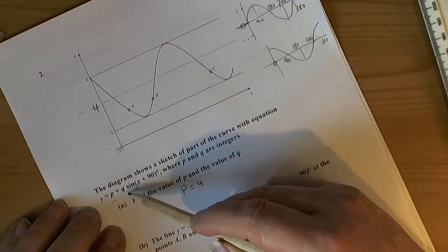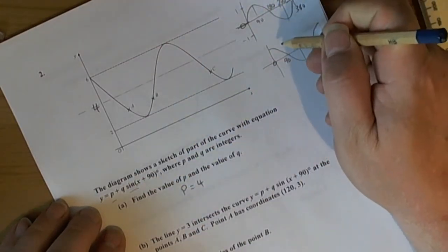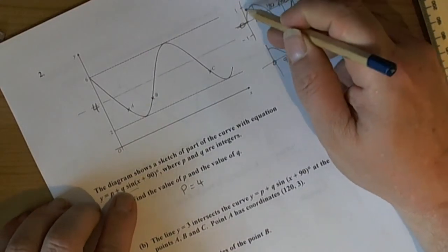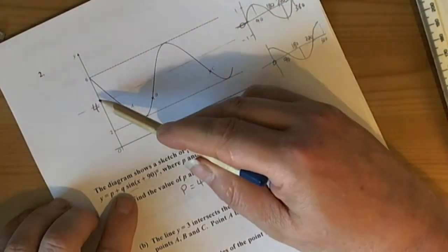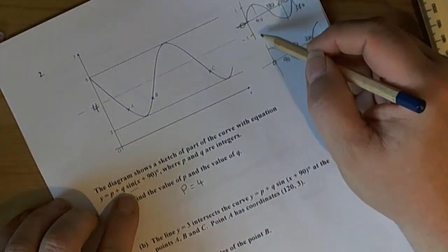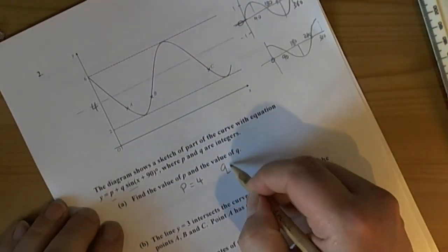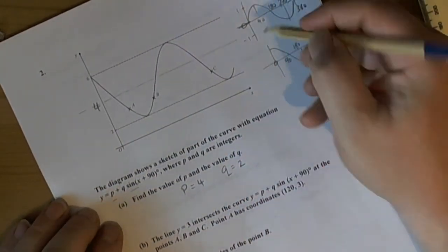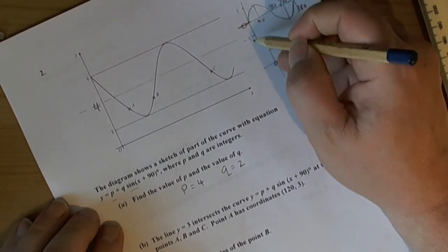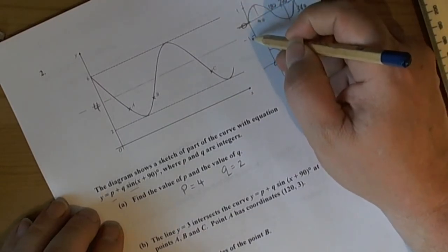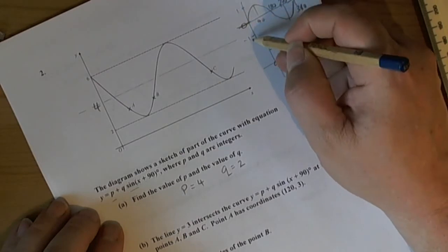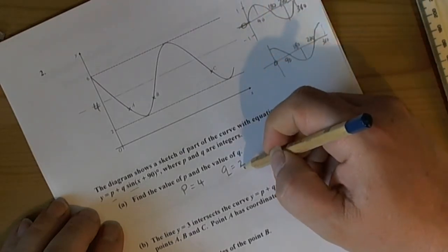Q is the translation, the stretch. So we've gone from 4 to 6 so it's going to be a stretch of 2. So Q is 2. So in other words what went from 1 to minus 1 it has now got a gap of 4. So what was a gap of 2 is now a gap of 4 so it's been multiplied by 2.